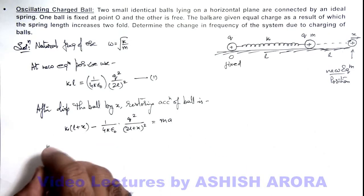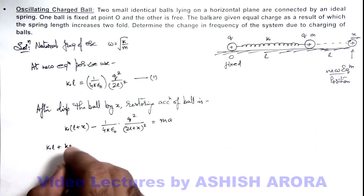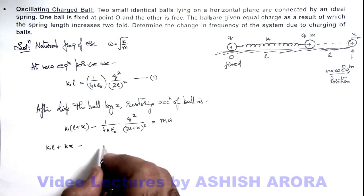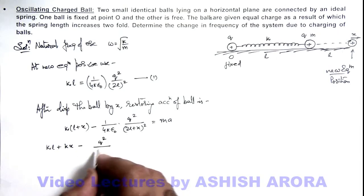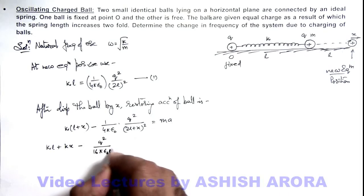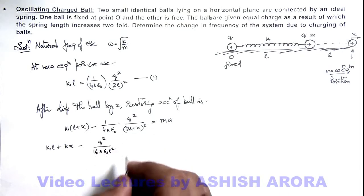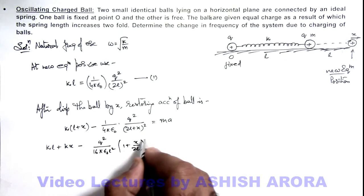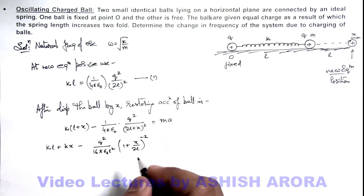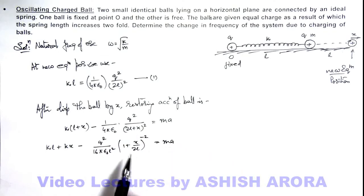We simplify this, you can see we are getting it as kl plus kx minus... it can be written as q squared by... here I can take this 2l common out so this will be 4l squared. So this will be 16π epsilon_0 l squared. And here the remaining term I can write as (1 + x/2l) power minus 2. I have taken this denominator in numerator which is equal to m times a. And here x is very small. I can apply binomial over here and open this bracket and neglect the higher orders of x.